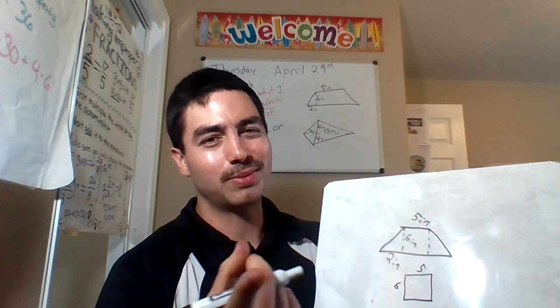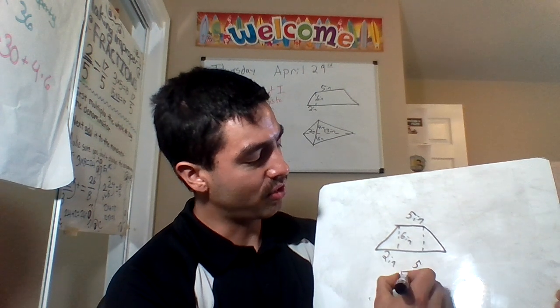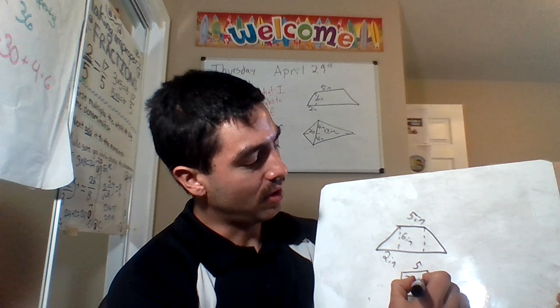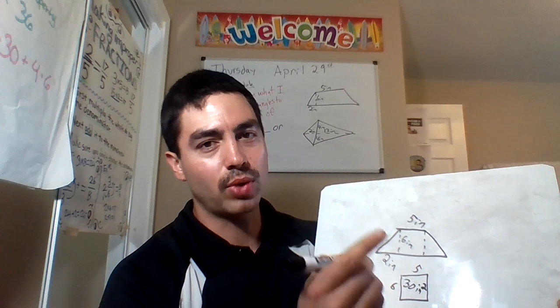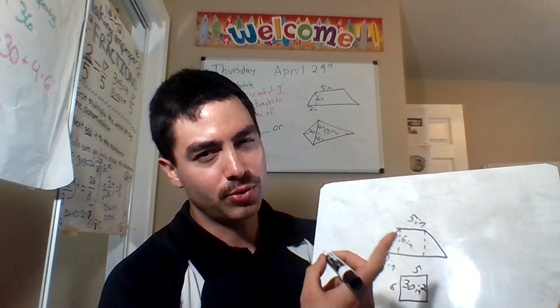Area of a rectangle, multiply it. Five times six is 30. Keep the units. It's gonna be inches in all areas are gonna be units squared. Inches squared, boom. Move on to the next one.